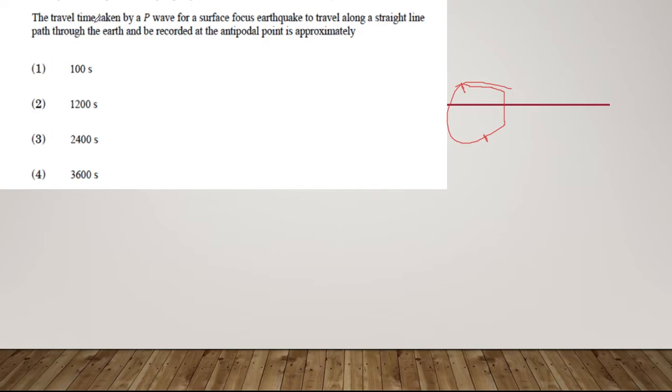We have to find travel time. Time is distance by velocity, right? T equals D by V. We have to find the total distance by velocity. The distance between these two points, our radius is 6400 kilometers, so the total diameter will be 12,800. This is the distance.